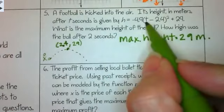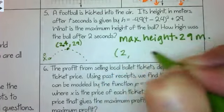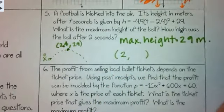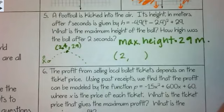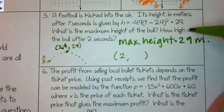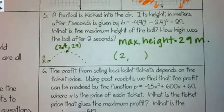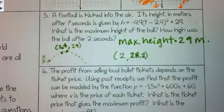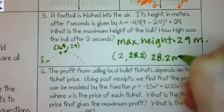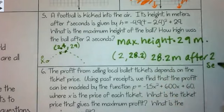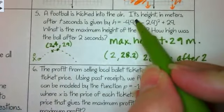How high was the ball after 2 seconds? We just have to fill in t equals 2. So 2 minus 2.4 is negative 0.4, squared is 0.16, multiplied by negative 4.9 and then add 29 — that gives us 28.2 meters. So after 2 seconds, the ball was 28.2 meters tall. All I did was fill in 2 for t in the equation.